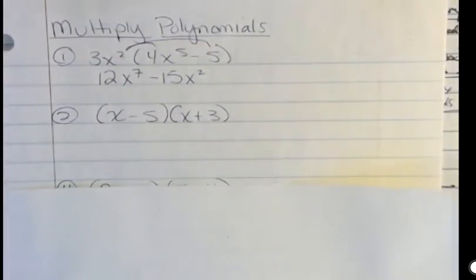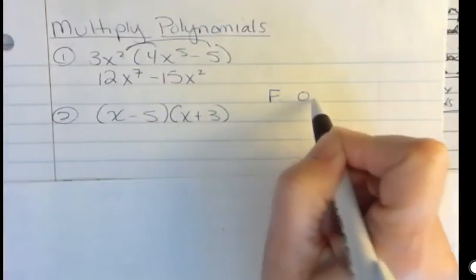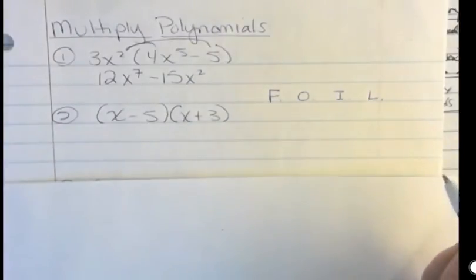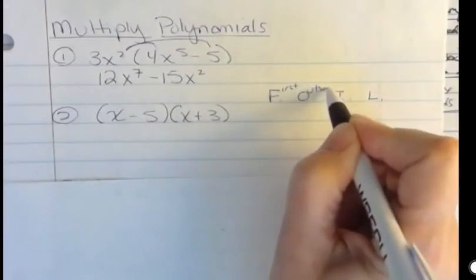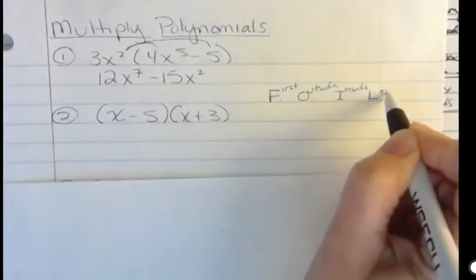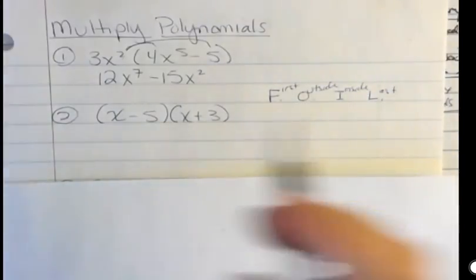In the 2nd one, I have a binomial times a binomial. And in that case, I would recommend using the FOIL method. That's something you probably remember from before. That stands for first, outside, inside, and last. But what are the four things then?